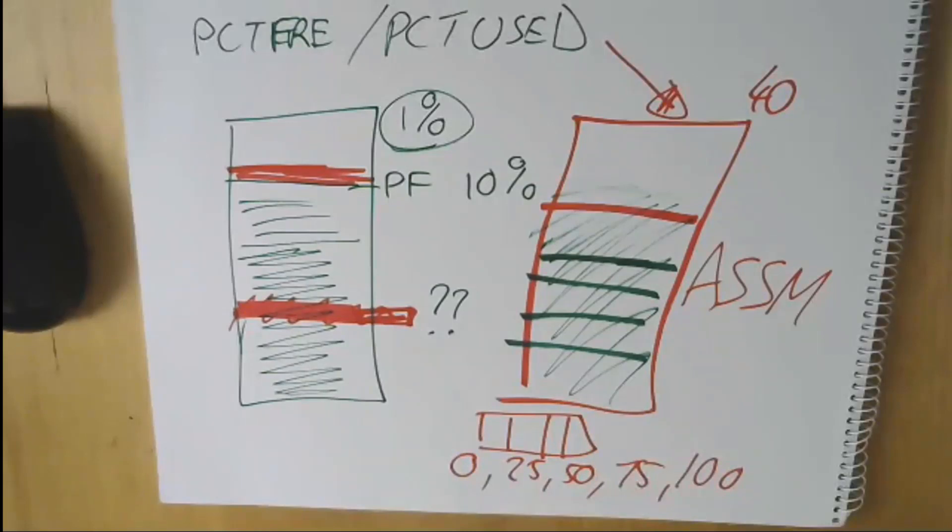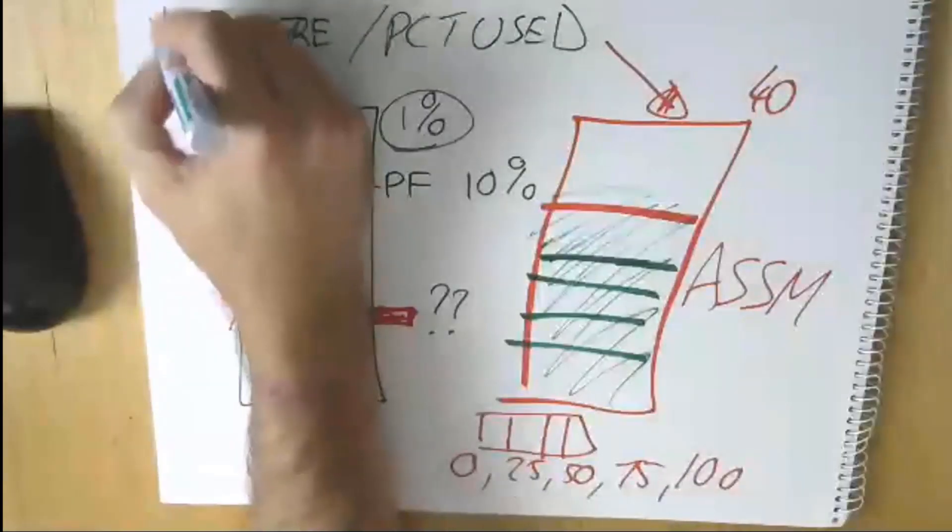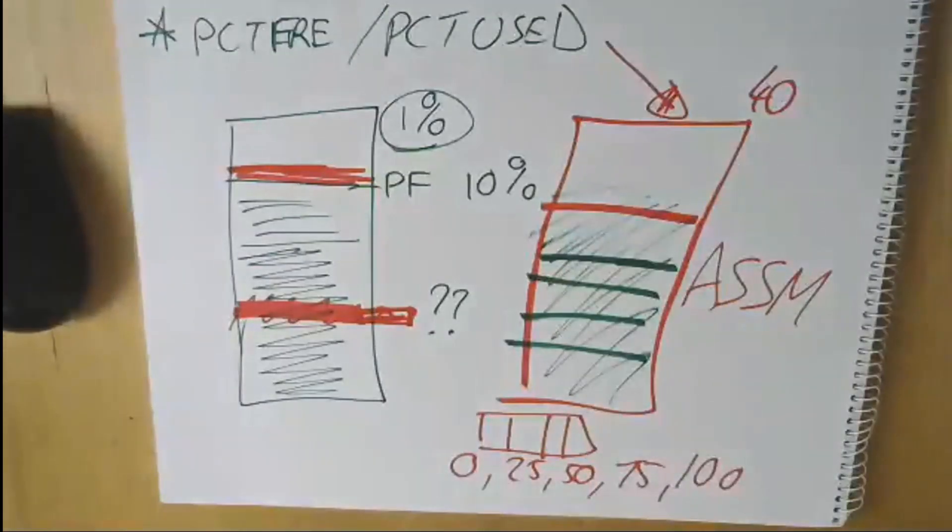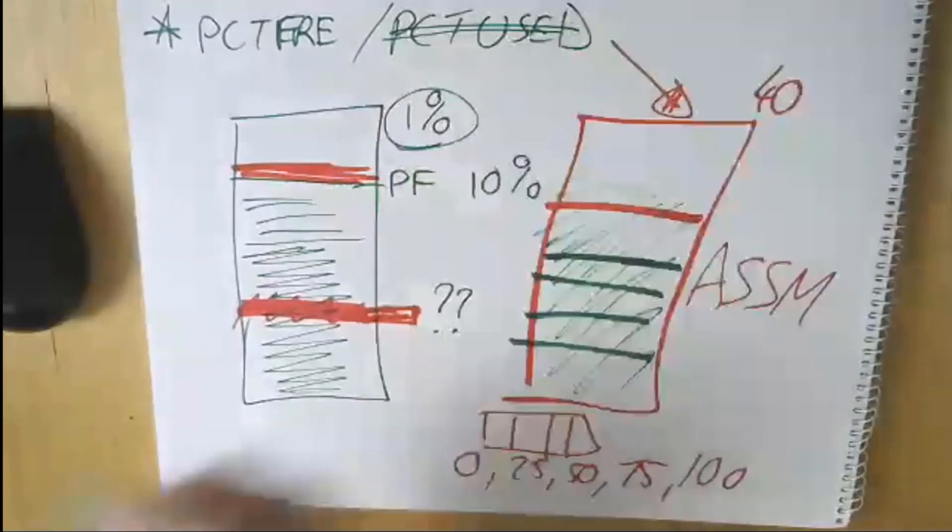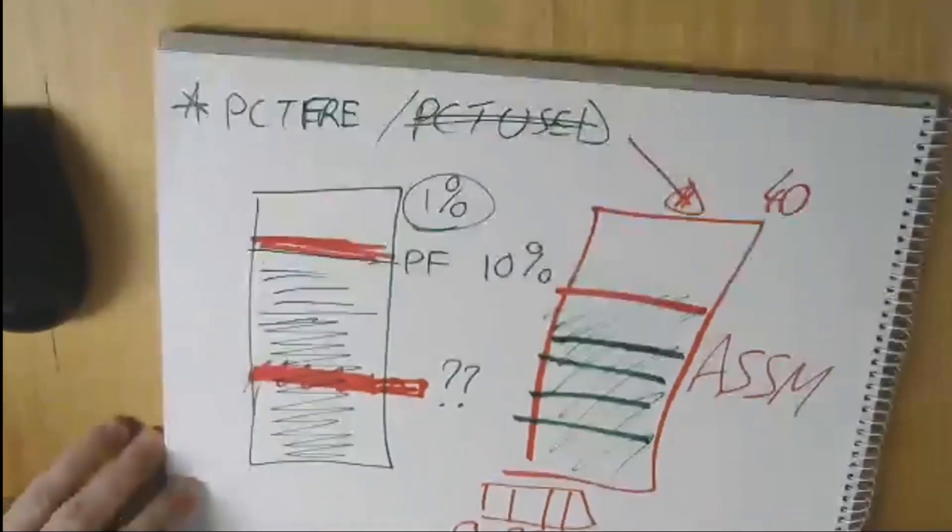Where I'm at the moment is percent free - yes, you should be setting it, and in my view, probably setting it to one or two percent for most examples where you're just doing inserts. Percent used, I'd be generally inclined to more or less forget about in most cases nowadays. So that's the first two we've covered.